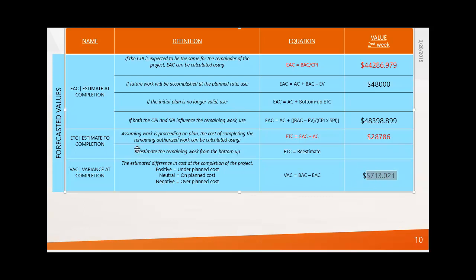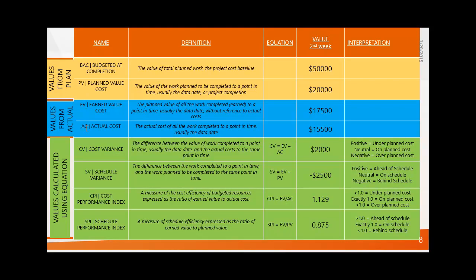So using all these terms — EAC, ETC, VAC, PV, EV, AC, CV, SV, CPI, SPI — you can fully interpret your project's performance. That's earned value analysis. We will now take the same example into Primavera software to verify we get the same results, and I'll also show you how to generate financial S-curves in Primavera. Make sure you are solid on this theory before the next video. Keep watching and keep subscribing — thank you!